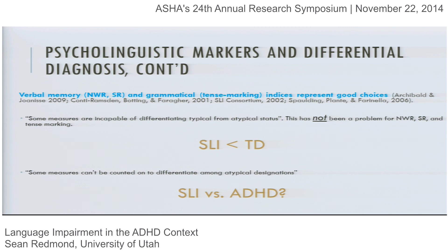I'm going to suggest that the emerging markers of specific language impairment — non-word repetition, sentence recall, and grammatical tense marking indices — represent good choices, in part because they're being used in genetic work to look at the underlying mechanisms for language impairment. These measures have been really good for differentiating typical from atypical status. The next question is how good they are at differentiating between different clinical conditions.